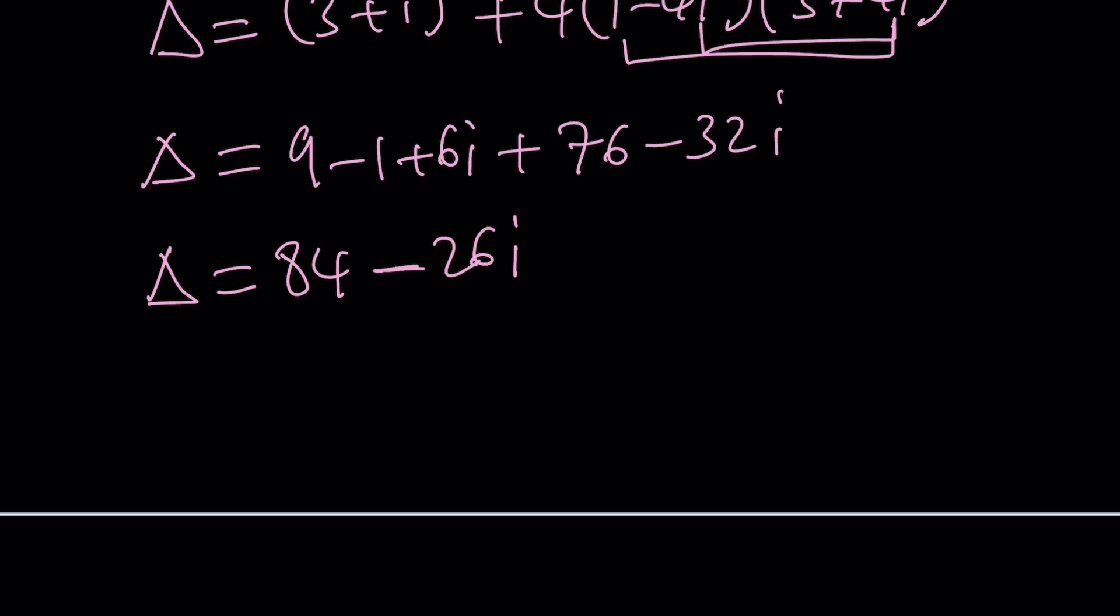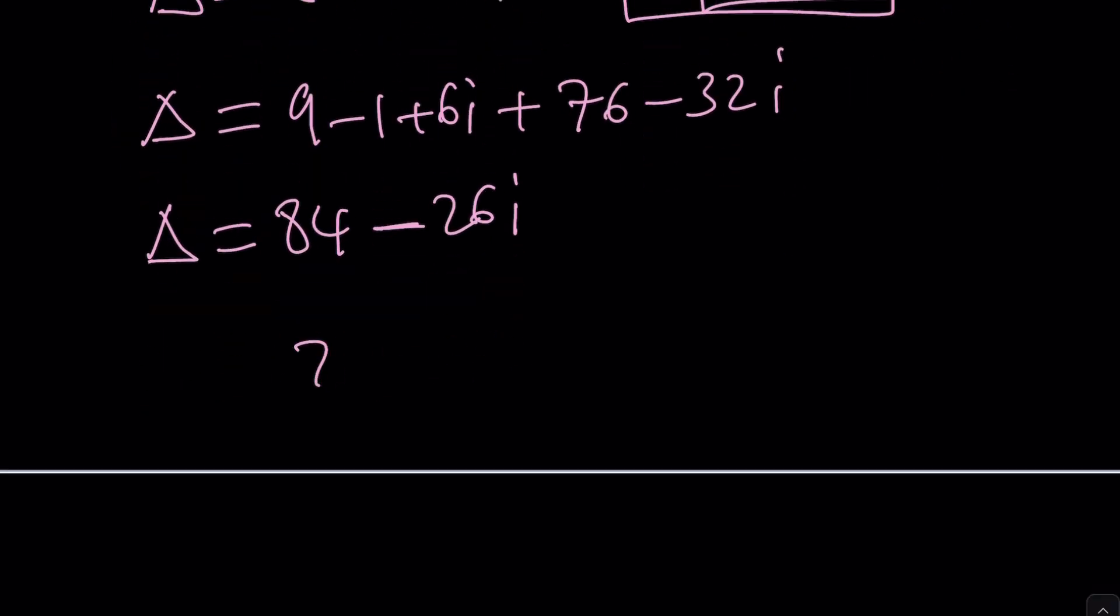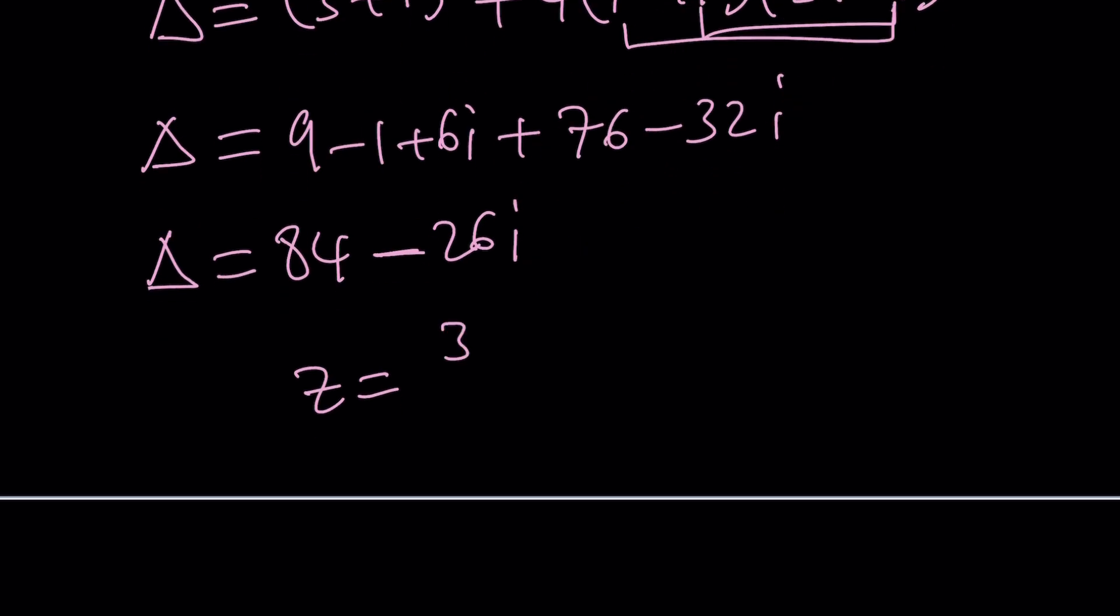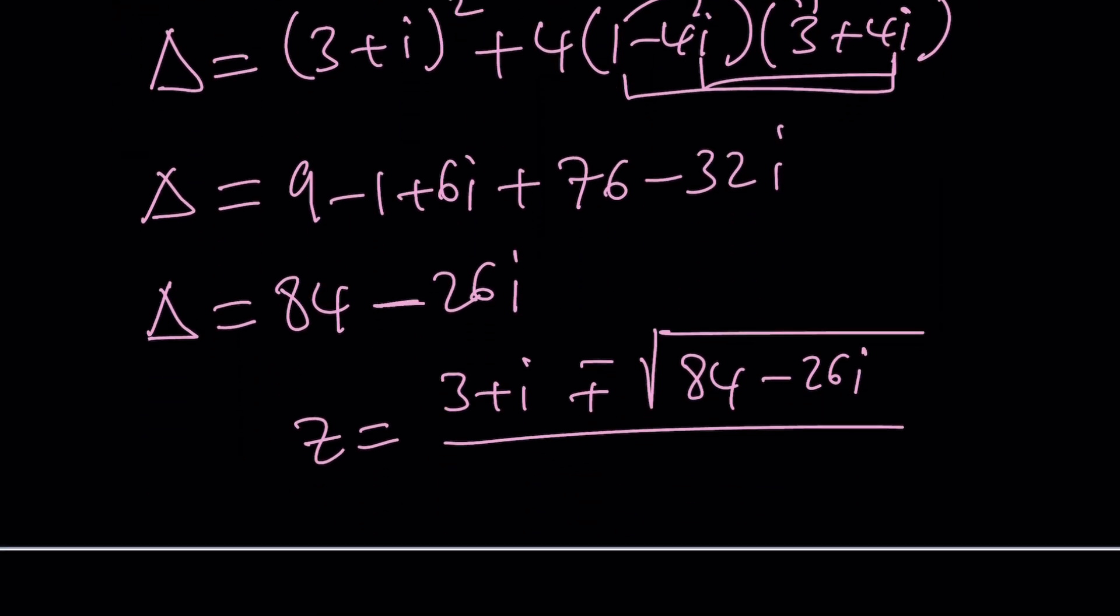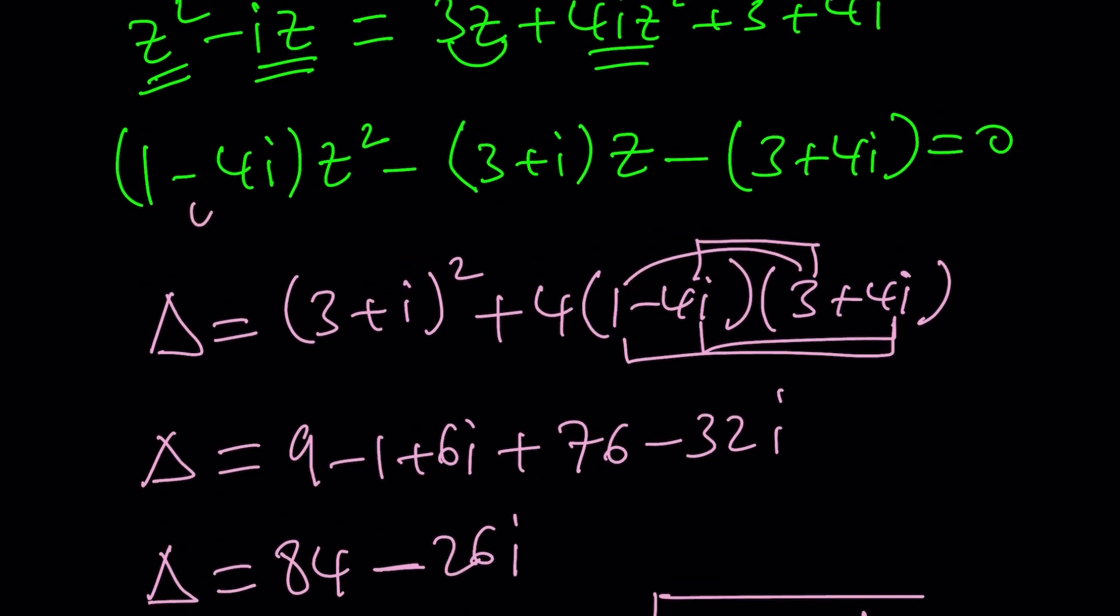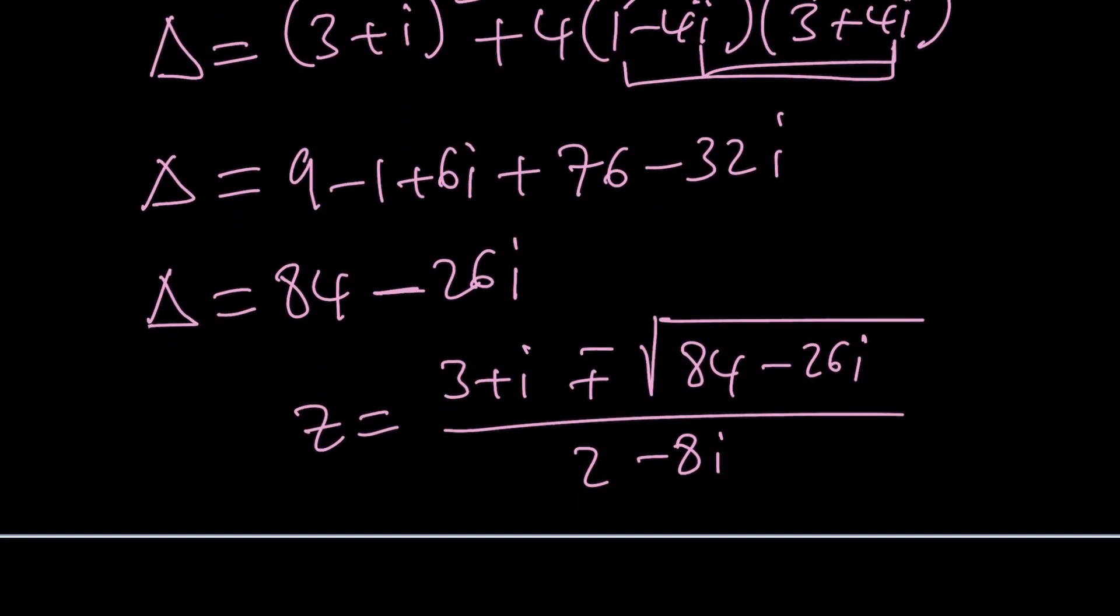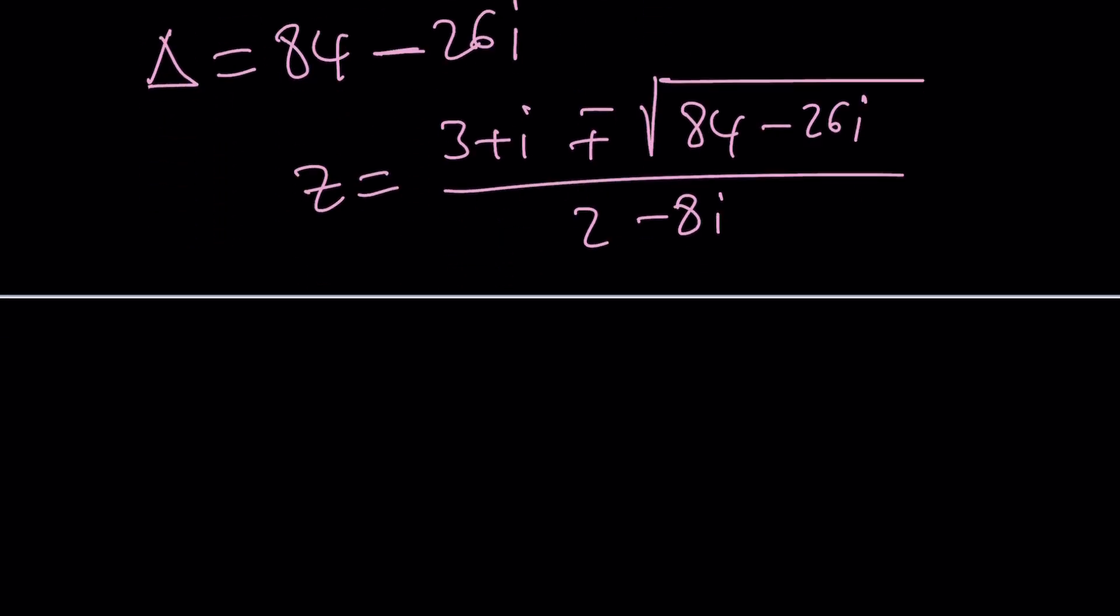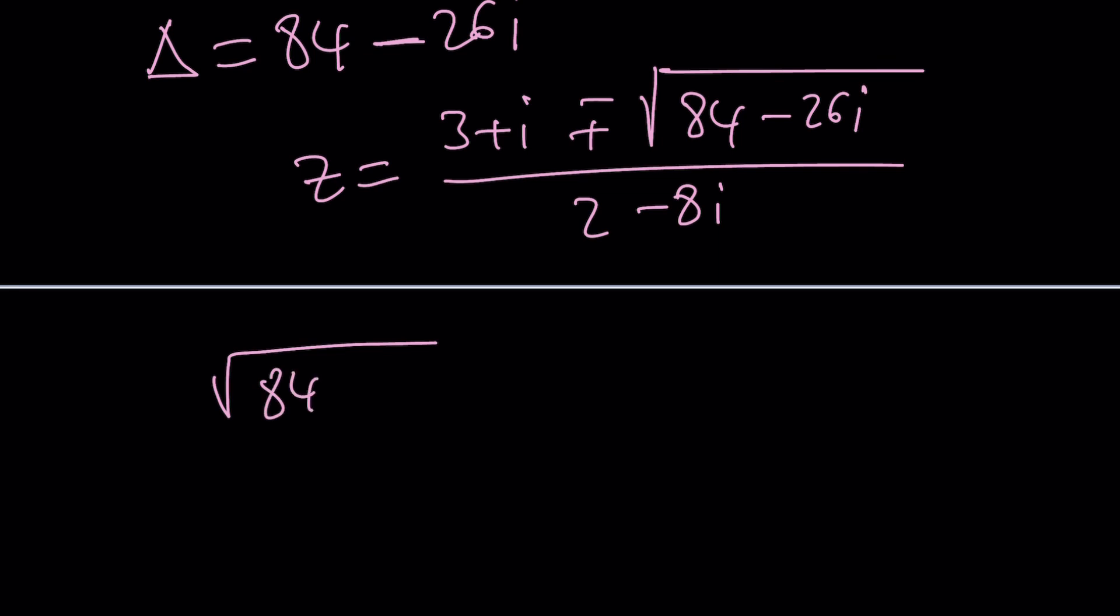Write the solutions. z equals, by the quadratic formula, negative b, which is 3 plus i, plus minus the square root of 84 minus 26i, divided by 2a, which is 2 minus 8i. By the way, a is not 1. Be careful. The coefficient of z squared is a. So far, so good. Now, this should give us the solutions but what is the square root of, in other words, I should say, what are the square roots of 84 minus 26i? Because it has two square roots. One of them is the principal square root. I think the one with the positive real part. Am I correct? I hope so. So for me, you should be able to find it. But how do you find the square root of this number? Let's talk about it for a little bit.